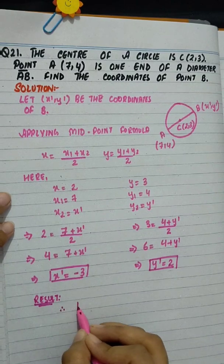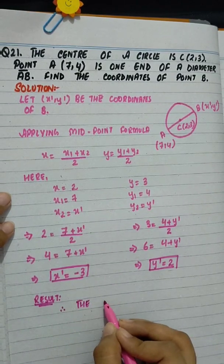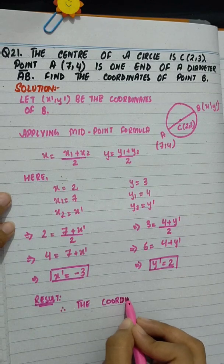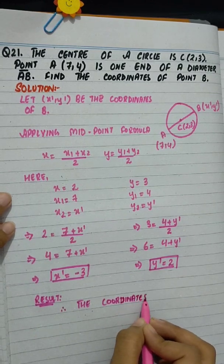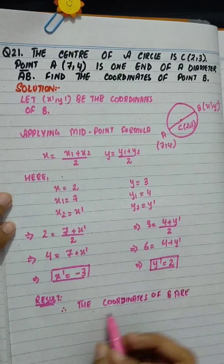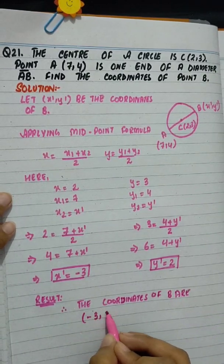Therefore, the coordinates of B are minus 3 comma 2.